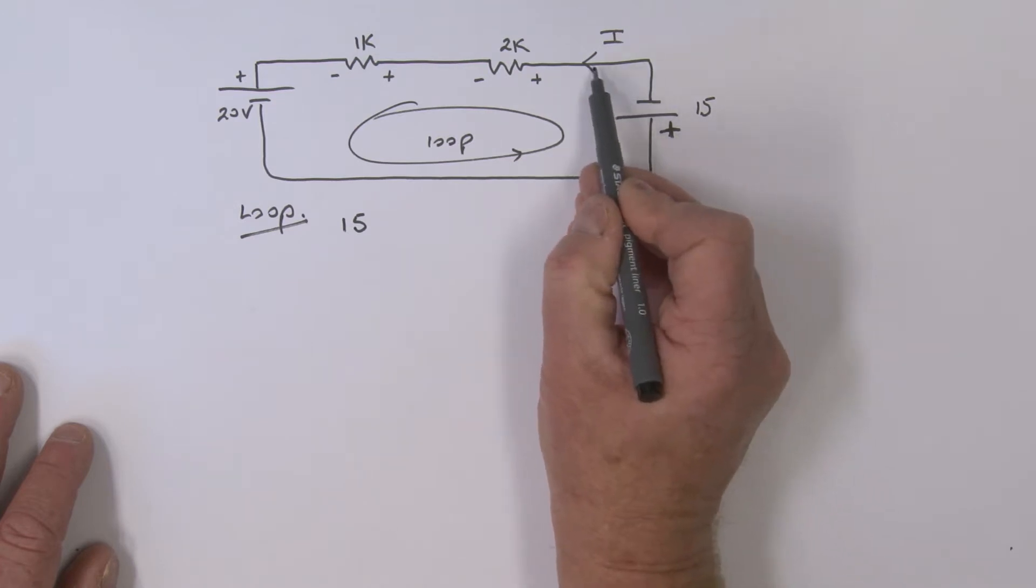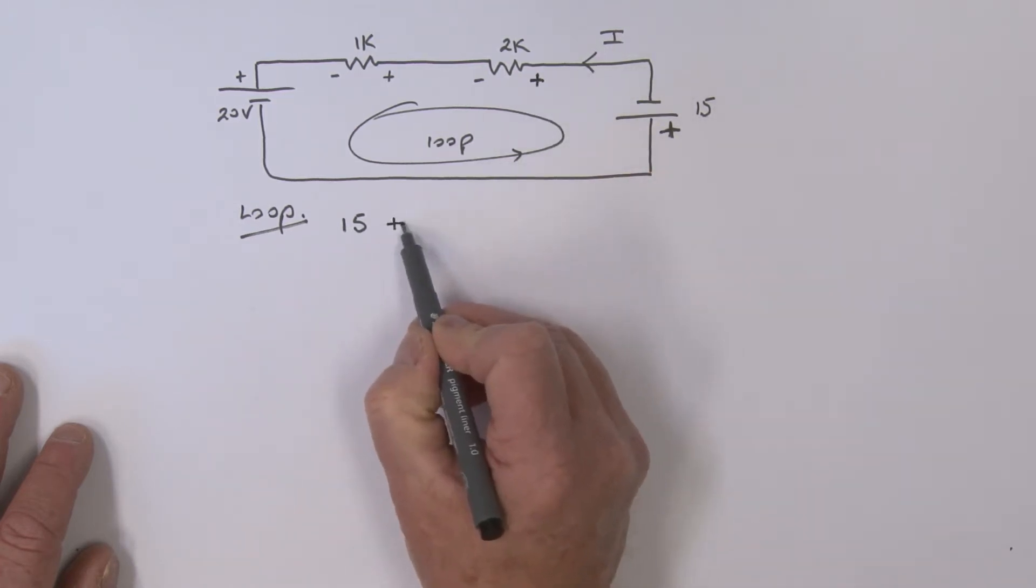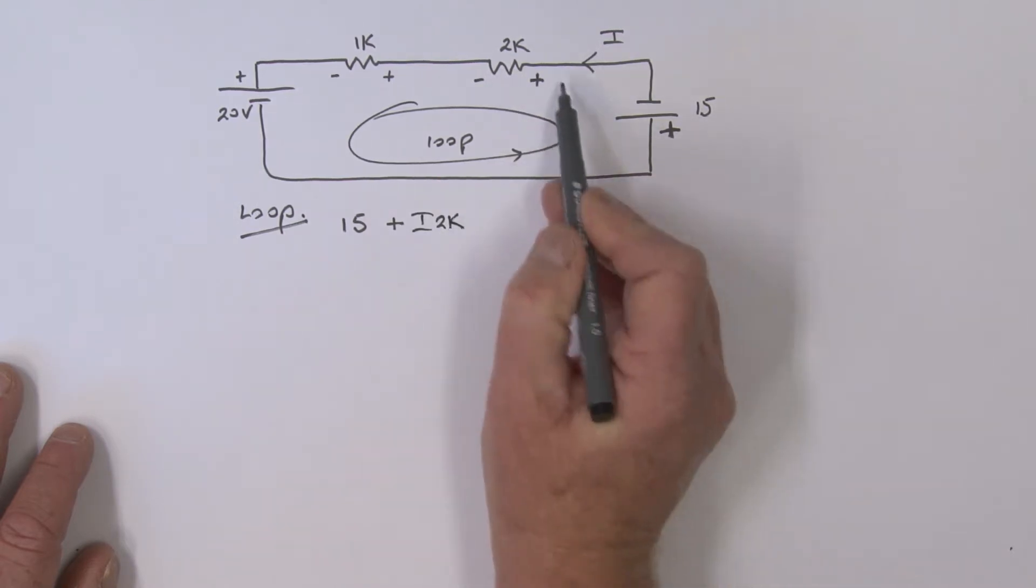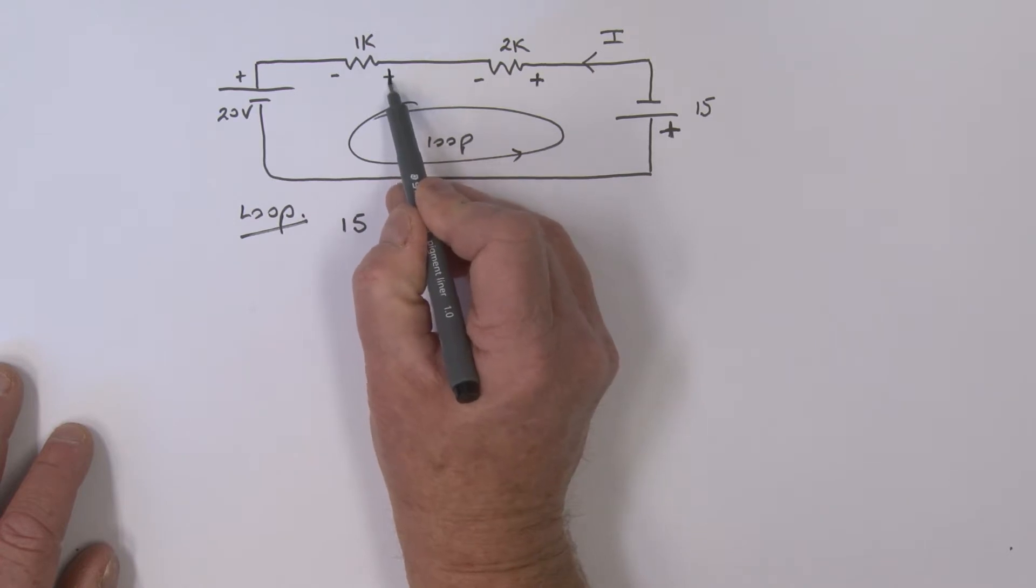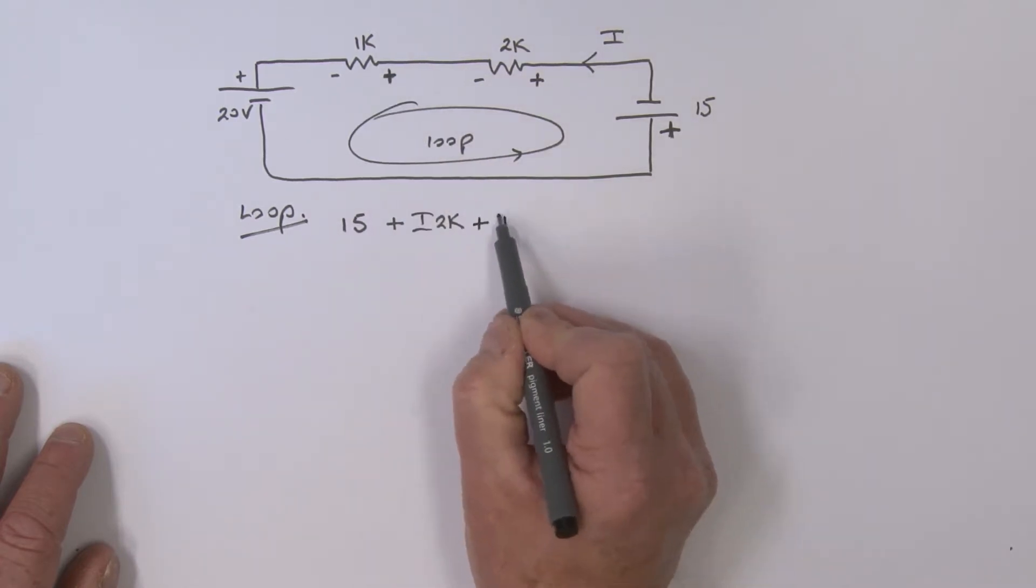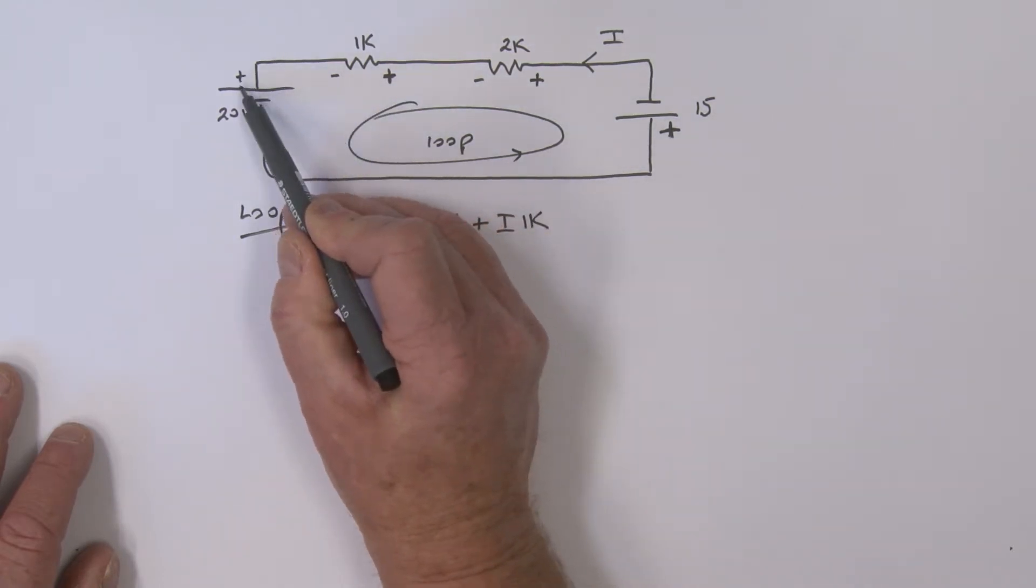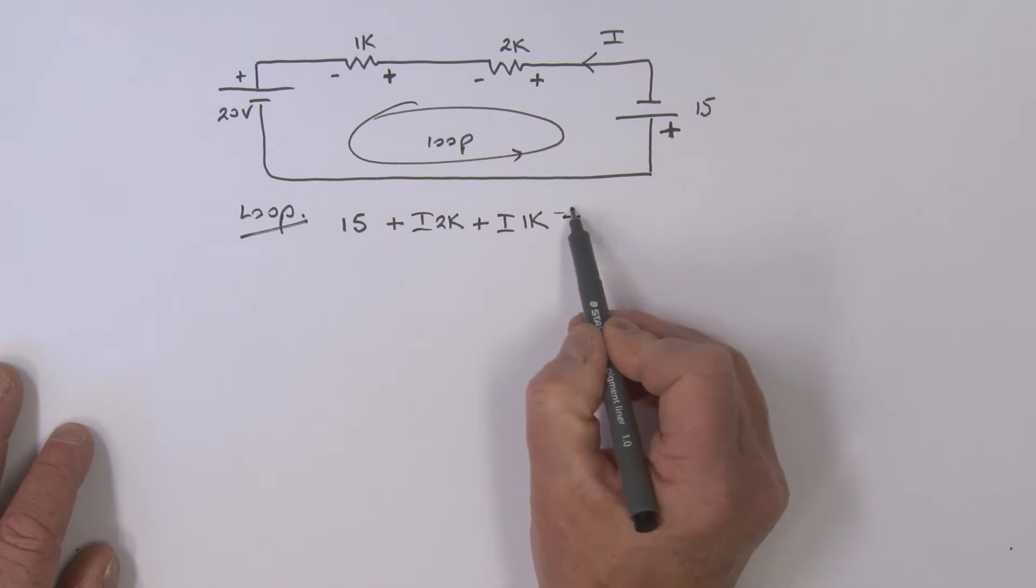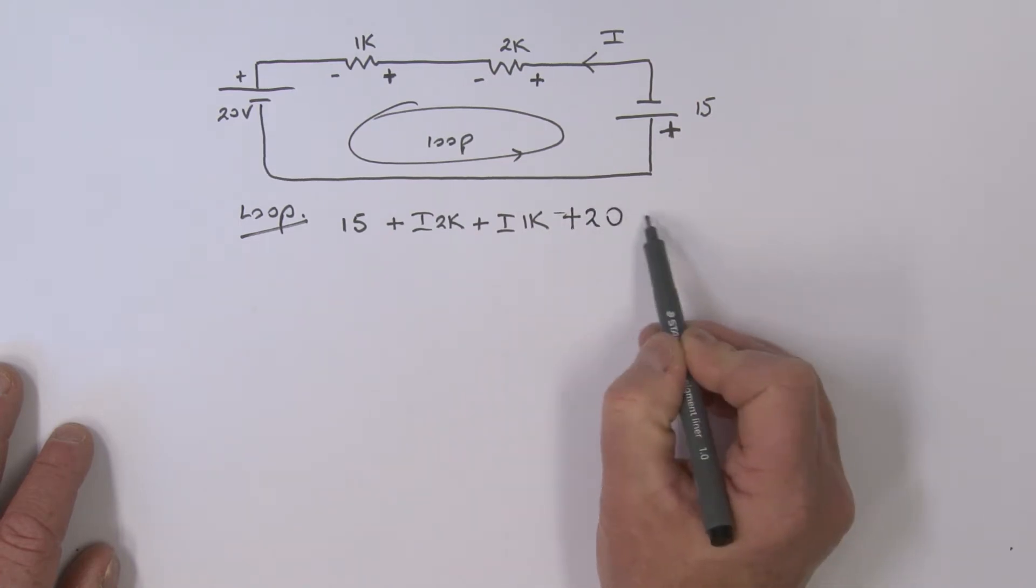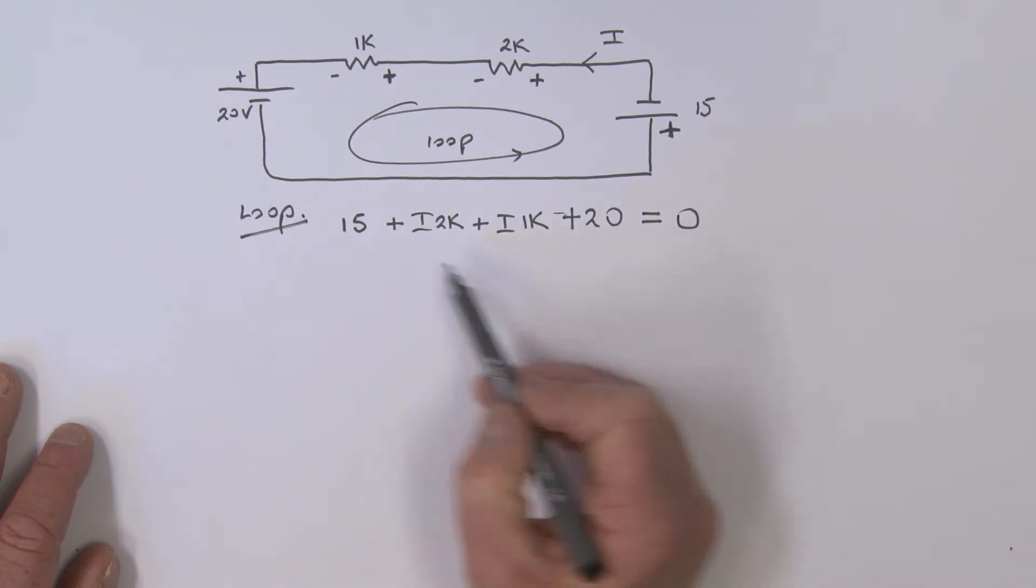As I travel around the loop again, I see a positive sign here, so I'm going to call that a plus I×2K. Coming around, I see a positive sign first and I call that voltage an I×1K. Coming around the loop again, I see the positive sign there—I say that is a plus 20. And all of that is equal to zero. So we're going to solve for this I.